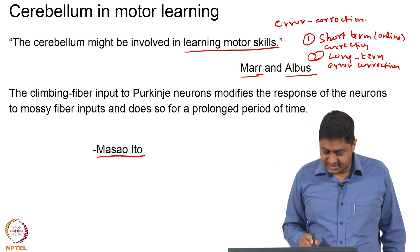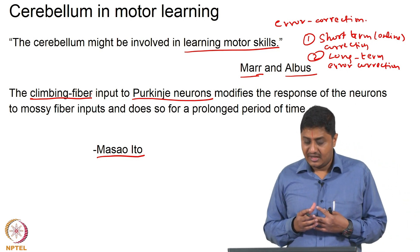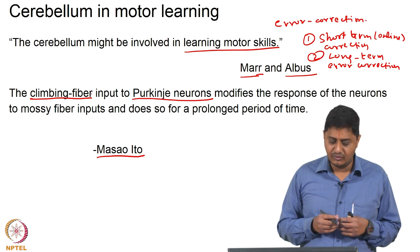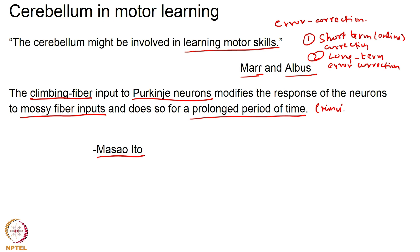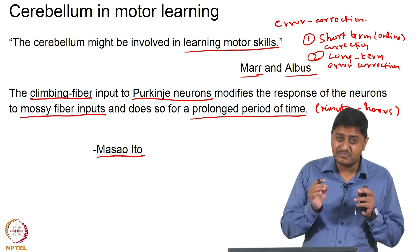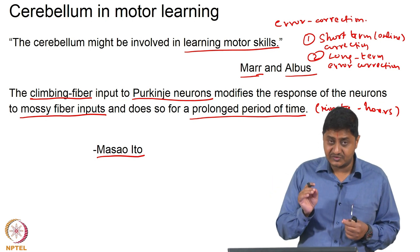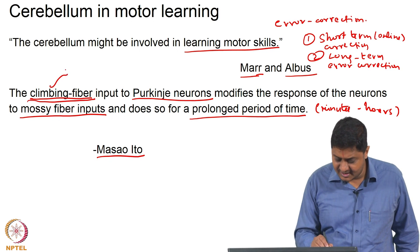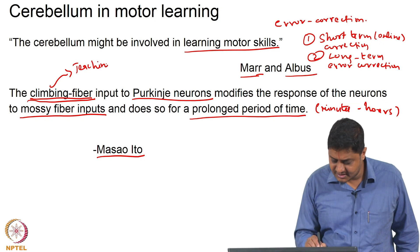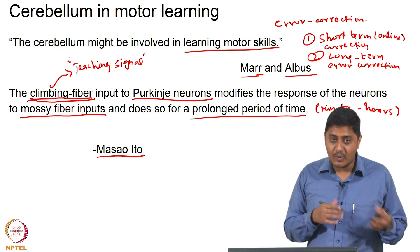Later, Masao Ito proposed that the climbing fiber input to Purkinje neurons contains important information in the sense that it modifies the response of Purkinje neurons to future mossy fiber inputs, and it does so for a relatively prolonged period — from several minutes to several hours. The response to specific mossy fiber input is modified or modulated by climbing fiber activity. In this sense, climbing fiber activity can be called a teaching signal.